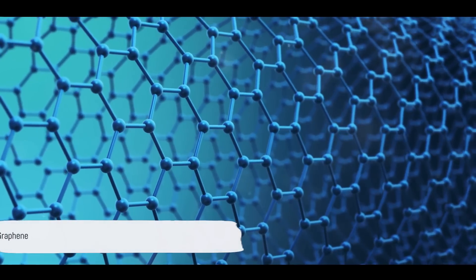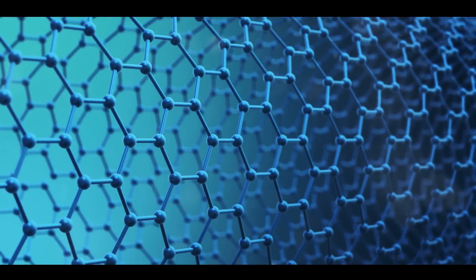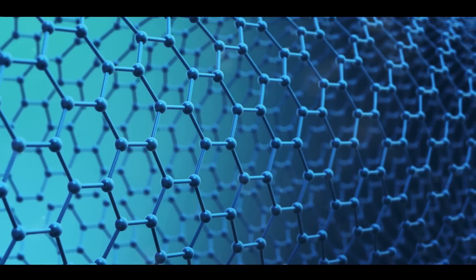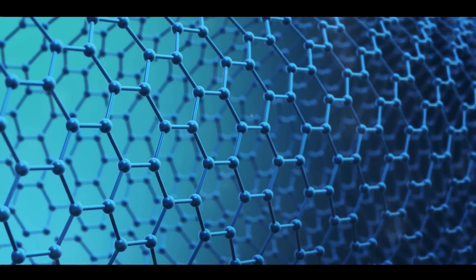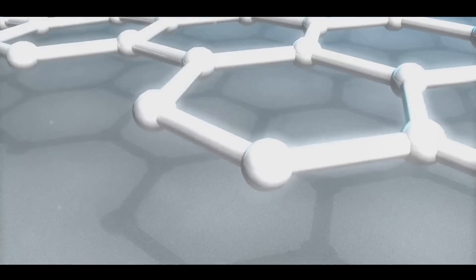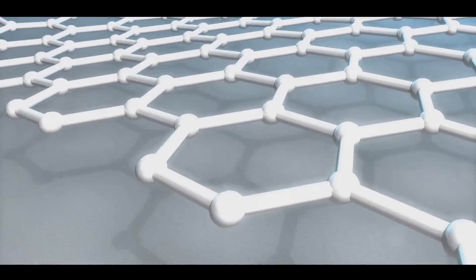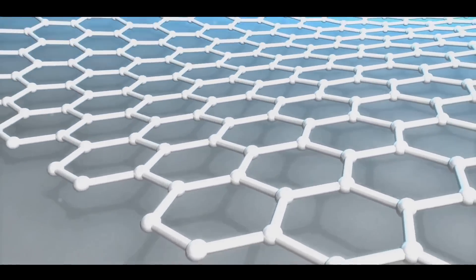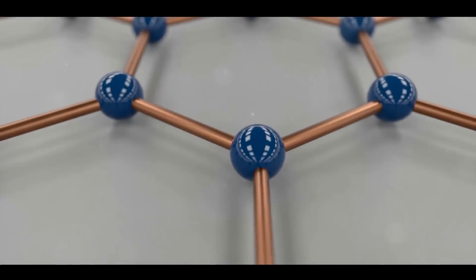Next up is graphene. Imagine a single layer of carbon atoms arranged in a two-dimensional honeycomb lattice. That's graphene. A material so thin it's considered two-dimensional yet remarkably it's stronger than diamond and conducts electricity better than copper. This is not science fiction, this is graphene, the material of the future.